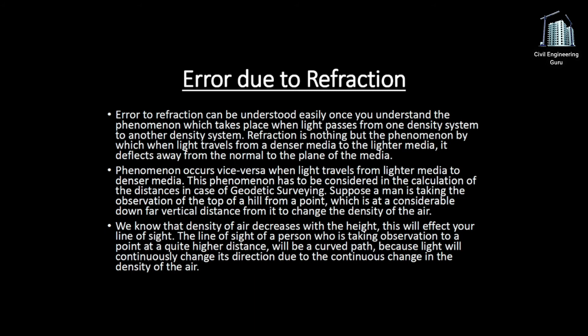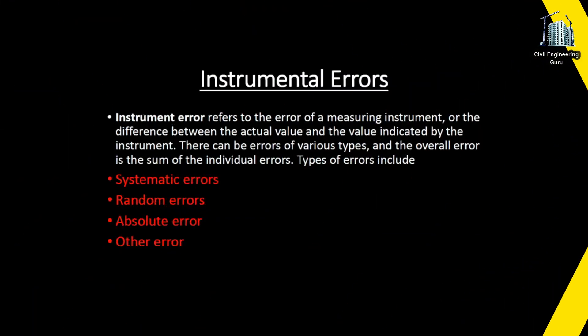Instrumental error refers to the error of a measuring instrument, or the difference between the actual value and the value indicated by the instrument. There can be errors of various types, and the overall error is the sum of the individual errors. Types of errors include systematic errors, random errors, and absolute errors.